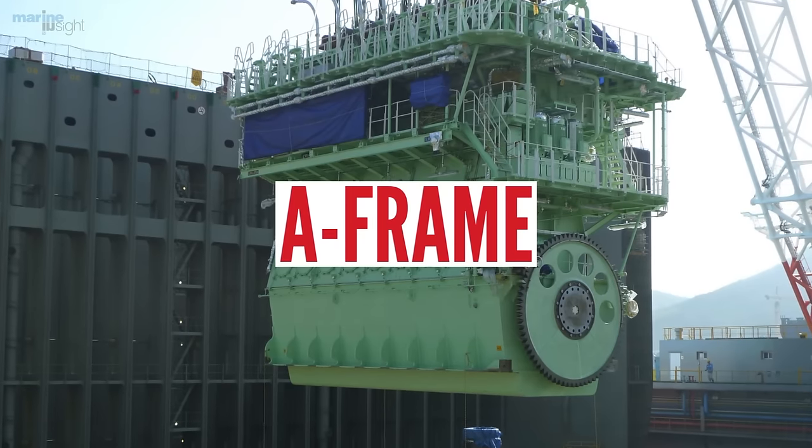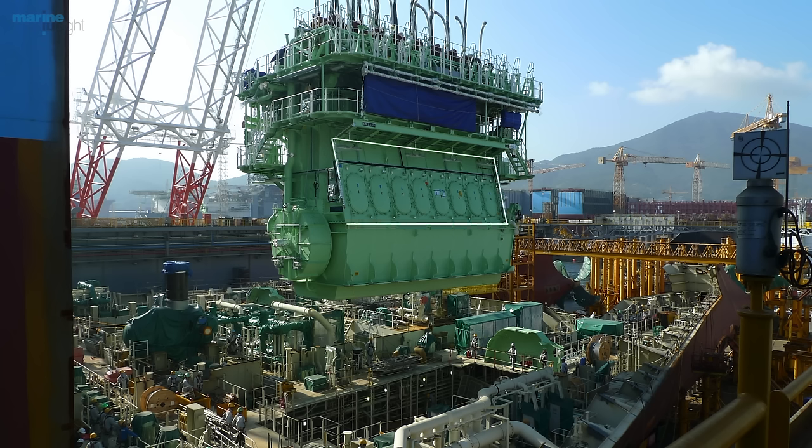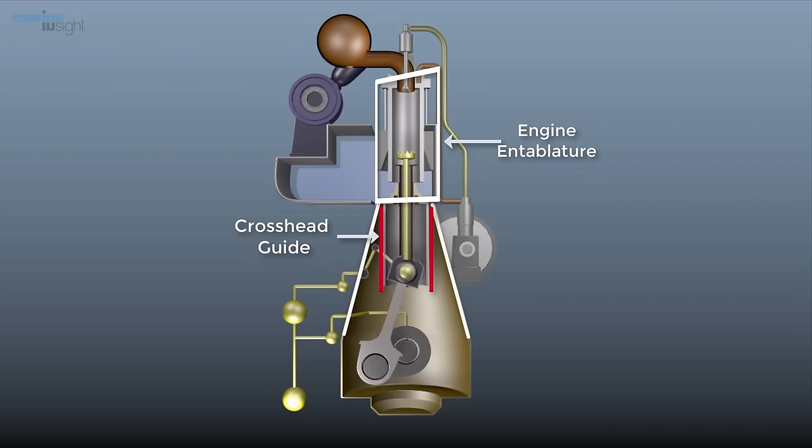A-frame: It is a fabricated steel structural element of a slow-speed two-stroke diesel engine. It stands on the bed plate above the main bearings. The A-frame carries the crosshead guides and supports the engine entablature, also known as the cylinder block.